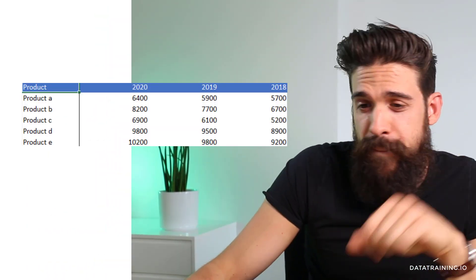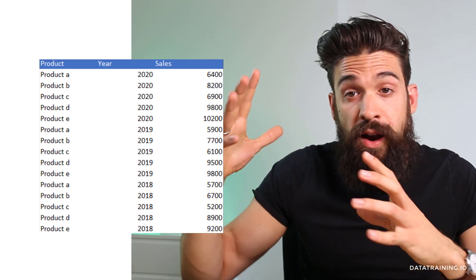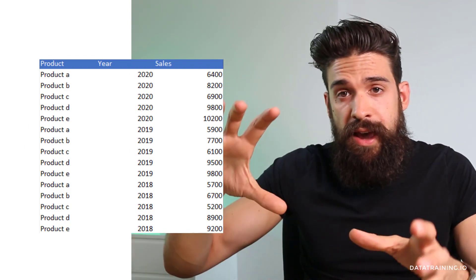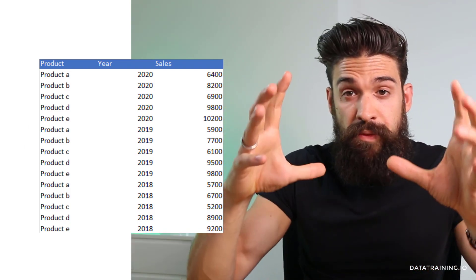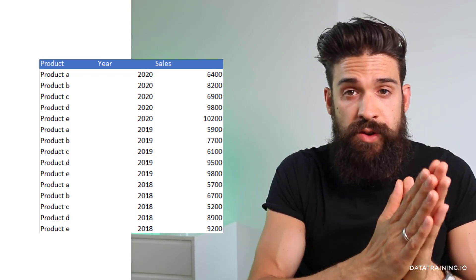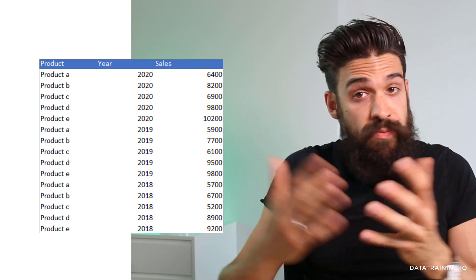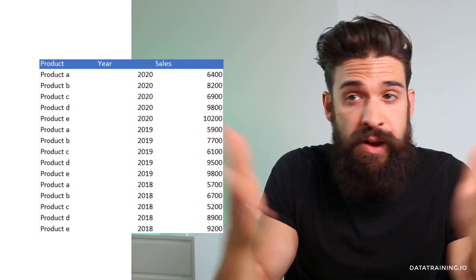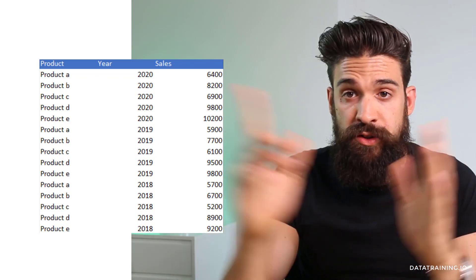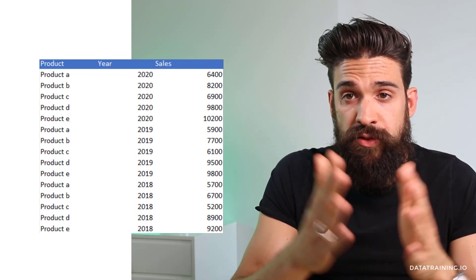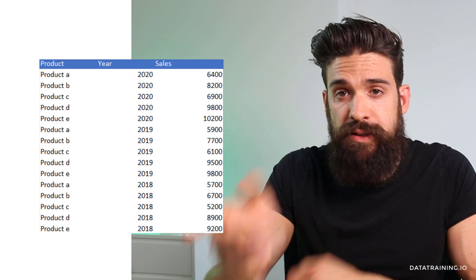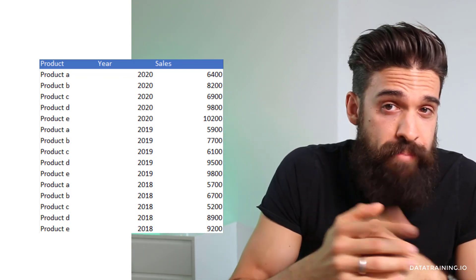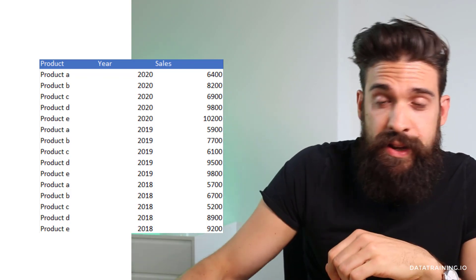The dataset shouldn't look like the wide format, but like this. We took our year columns 2018, 2019, and 2020 and converted them into just one year column. We ended up with three times as many rows as before, however our three columns are now just one. So we have product, year, and sales. With this data structure, we can work efficiently in Power BI.